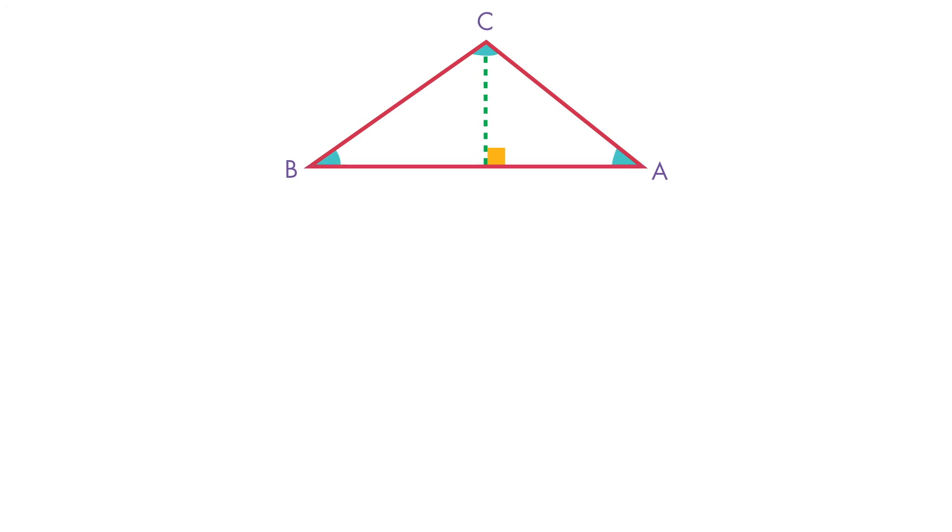The base of this triangle is 12 inches and the height is 6 inches. To calculate the area, we will multiply one-half times 12 inches times 6 inches. 12 inches times 6 inches is equal to 72 square inches.